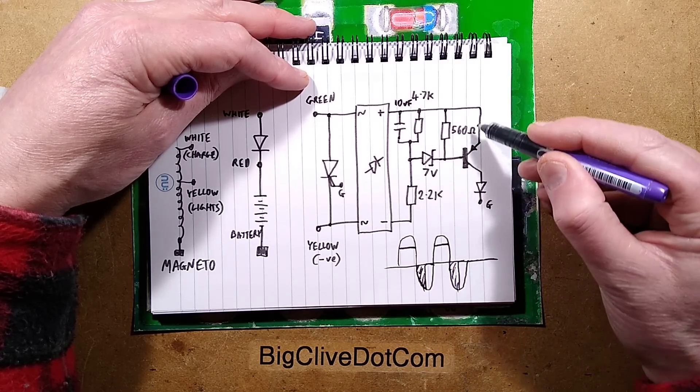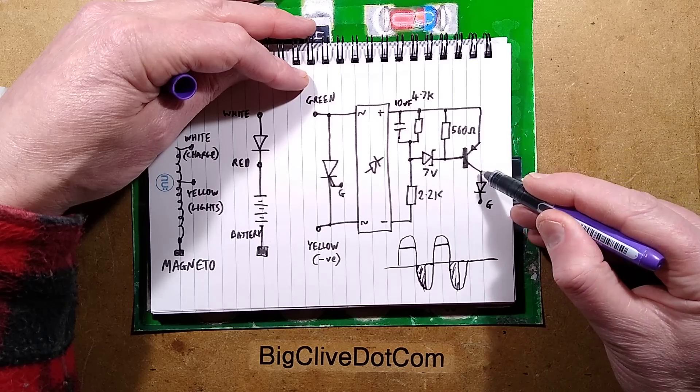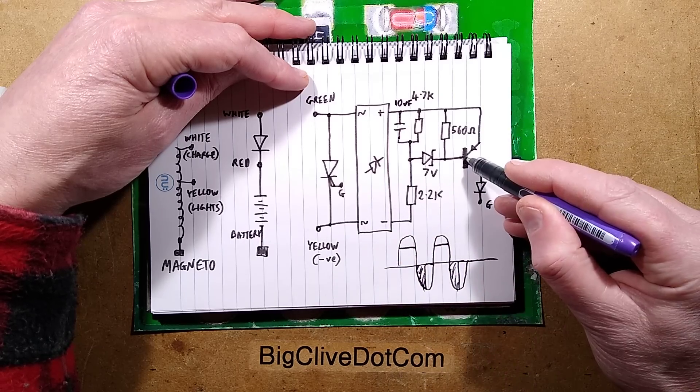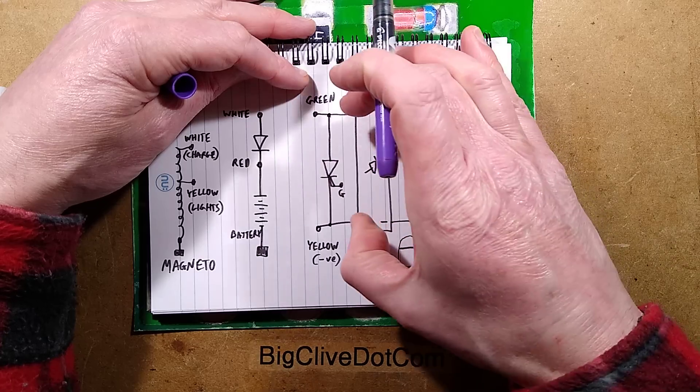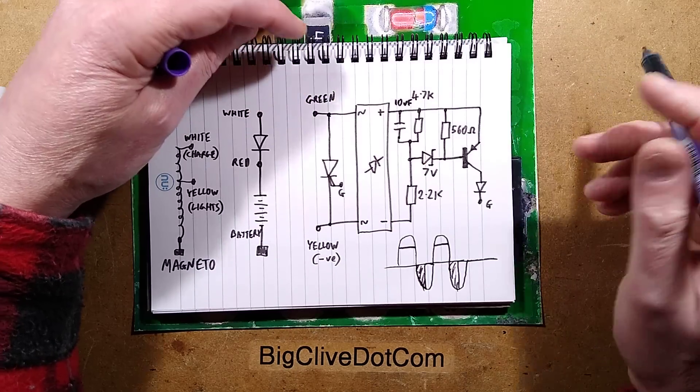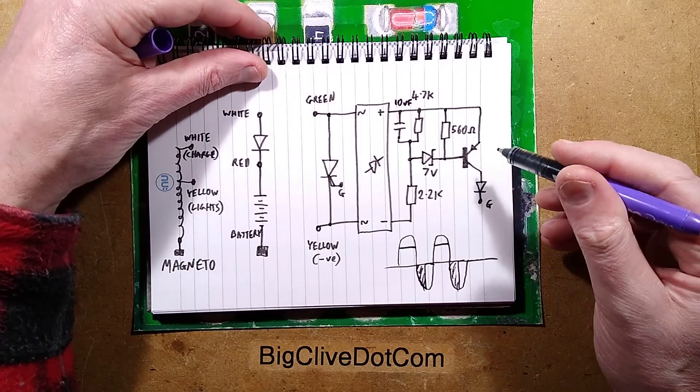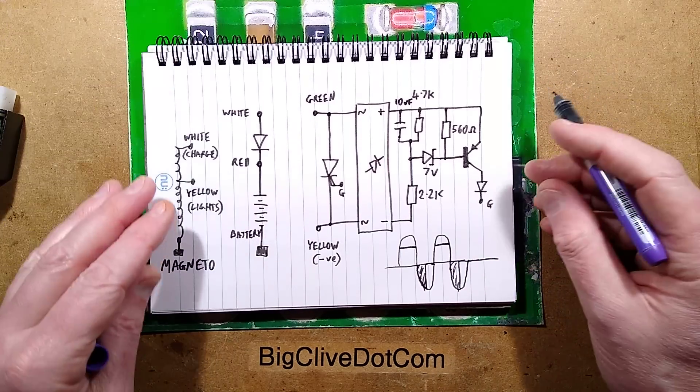The output of that rectifier goes to a PNP transistor which is switching to the positive rail. It's got a diode going to the gate of the thyristor. When this transistor turns on, it will turn the thyristor on and basically shunt the green and yellow together, short-circuiting the alternator. This is apparently how it works.